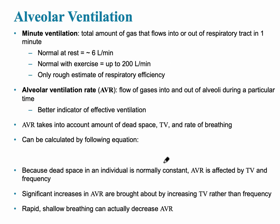The alveolar ventilation is the total amount of gas that flows into and out of the respiratory tract in one minute. The normal amount at rest is five to six liters per minute. With exercise, this can increase significantly — similar to how cardiac output increases — making it a rough estimate of respiratory efficiency.